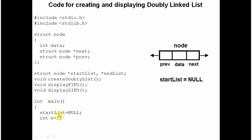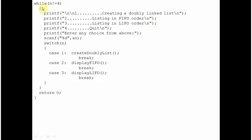start_list is initialized to null initially. On running the program you will get a menu offering four options: press 1 to create a double linked list, 2 to display the content in FIFO order, 3 to display the content in LIFO order, and 4 to quit. When you press 1, the create_double_list function will be invoked.